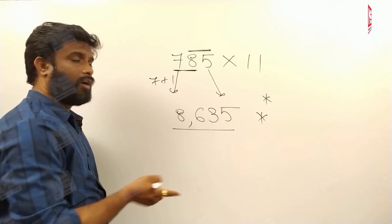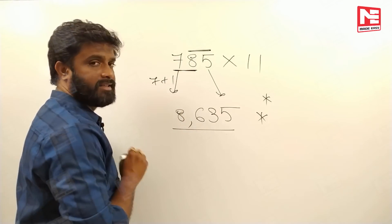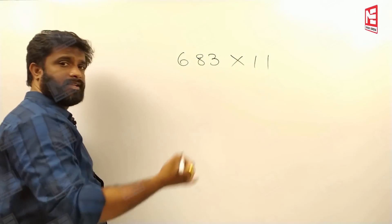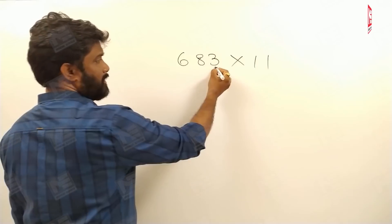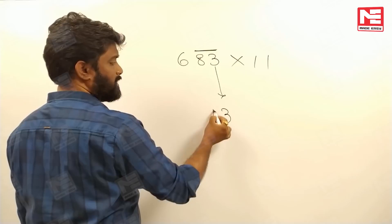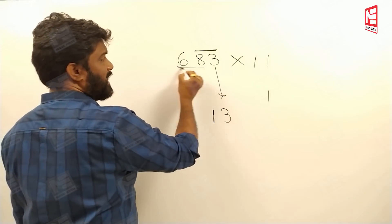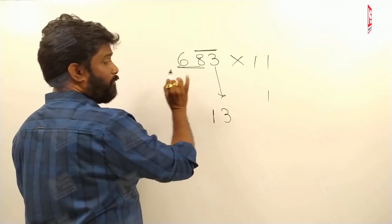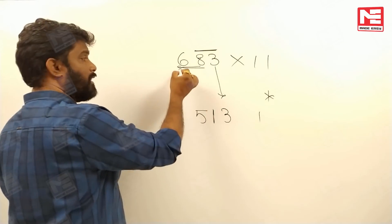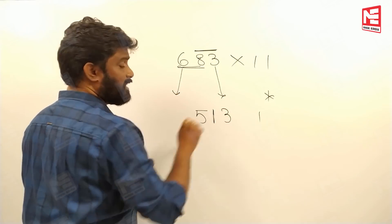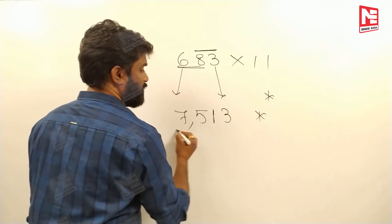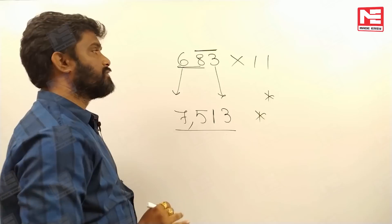One more carry-forward example: 683 into 11. Write 3 as it is. Then 8 plus 3 gives 11 — write 1, carry 1. Then 6 plus 8 gives 14, plus carry 1 gives 15 — write 5, carry 1. Then 6 plus carry 1 gives 7. Your answer is 7513.